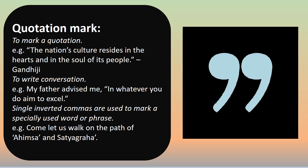Quotation marks, also known as inverted commas, are used to mark a quotation. Example: 'The nation's culture resides in the hearts and in the soul of its people.' — Gandhiji. They are also used to write conversation. Example: 'My father advised me, in whatever you do, aim to excel.' Single inverted commas are used to mark a specially used word or phrase. Example: 'Come, let us walk on the path of Ahimsa and Satyagraha.' Here, Ahimsa and Satyagraha are special words.